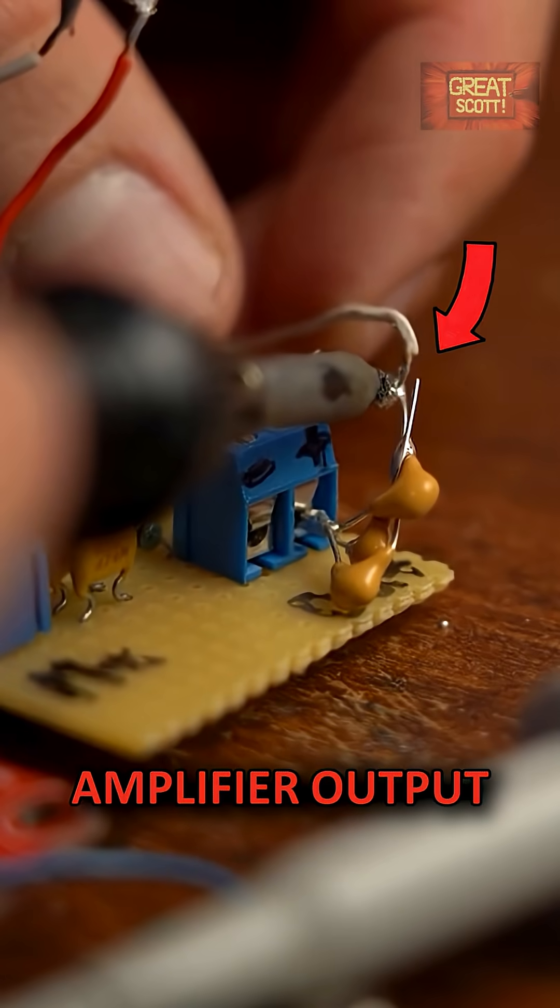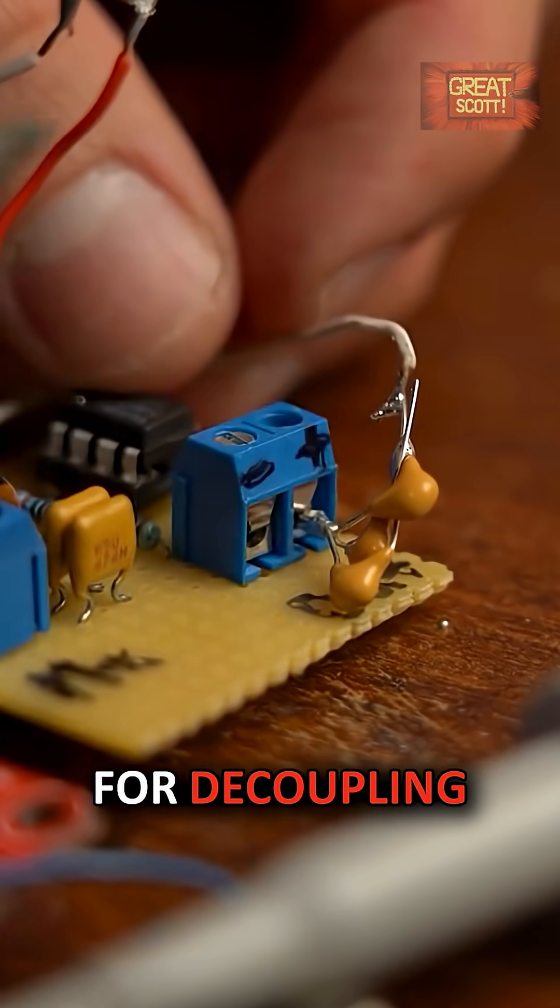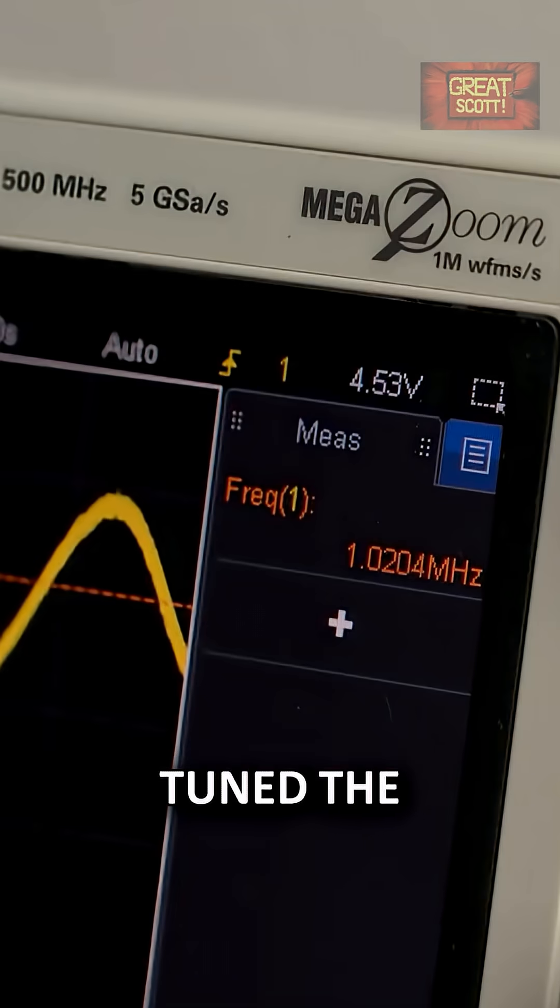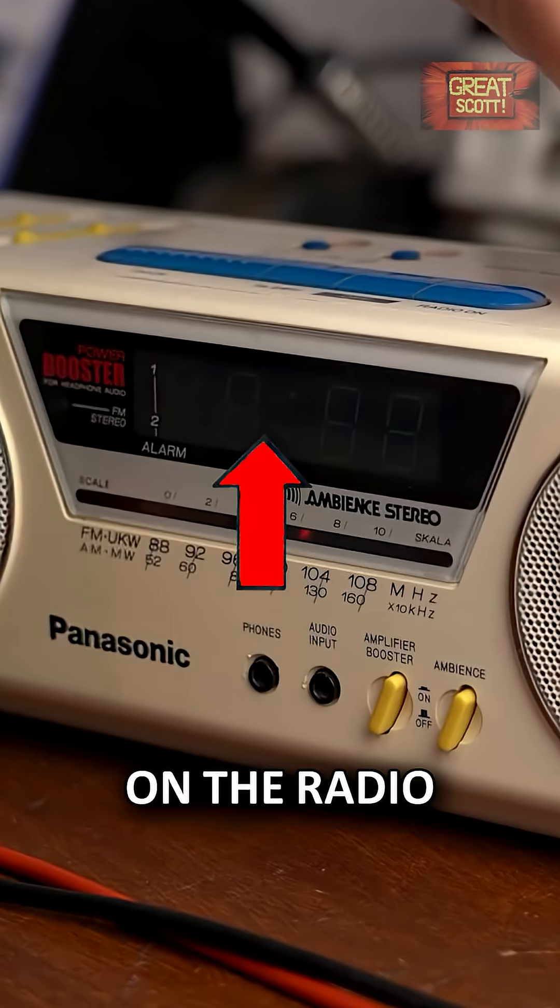So I connected the mic amplifier output to the pin through a 3uF capacitor for decoupling, added the antenna, tuned the frequency to 1MHz and selected the channel on the radio.